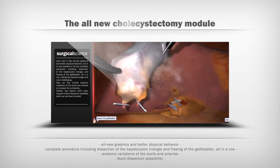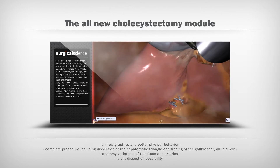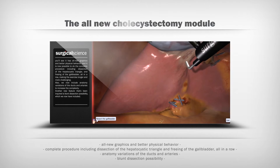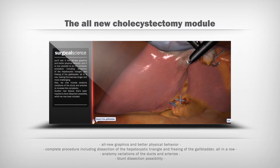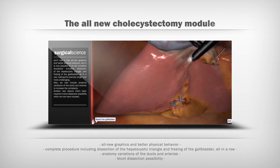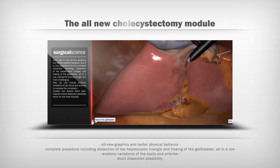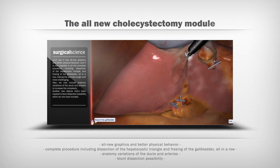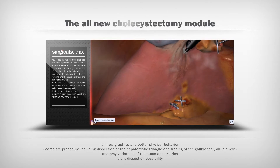We now include anatomy variations of the ducts and arteries to increase the complexity. Another new feature that's been added is blunt dissection, which we now have included.